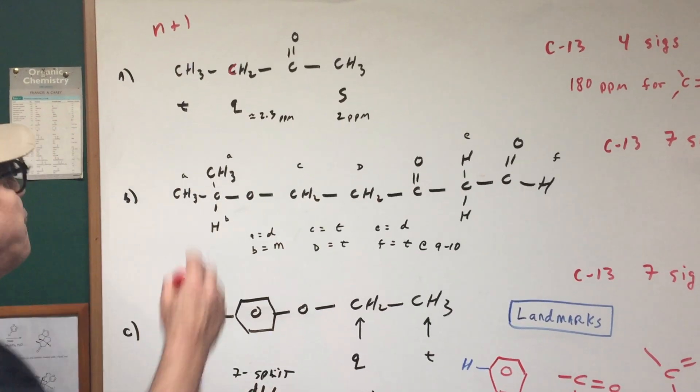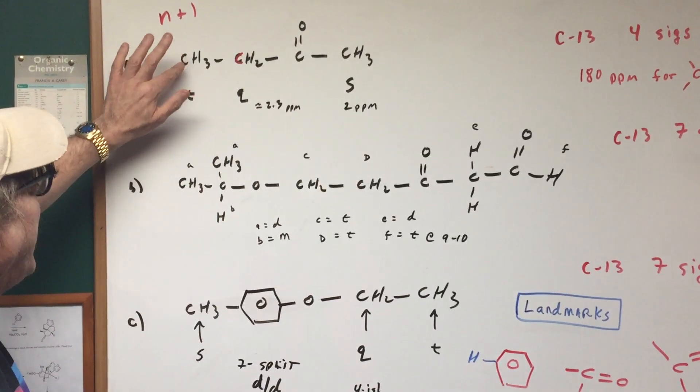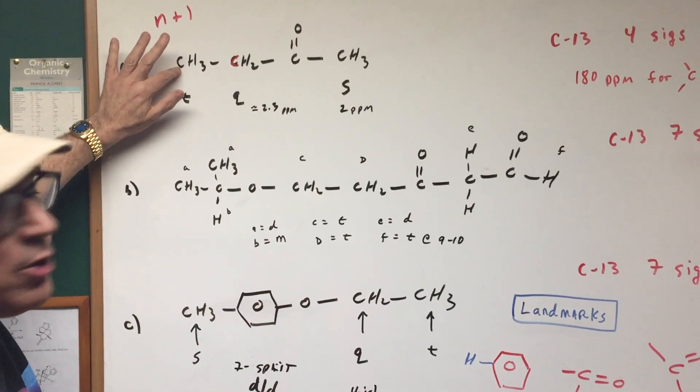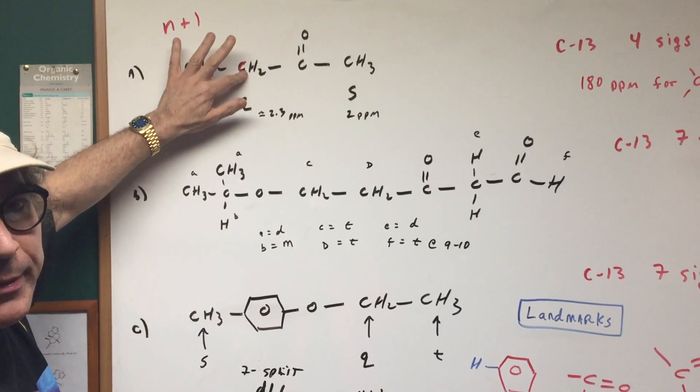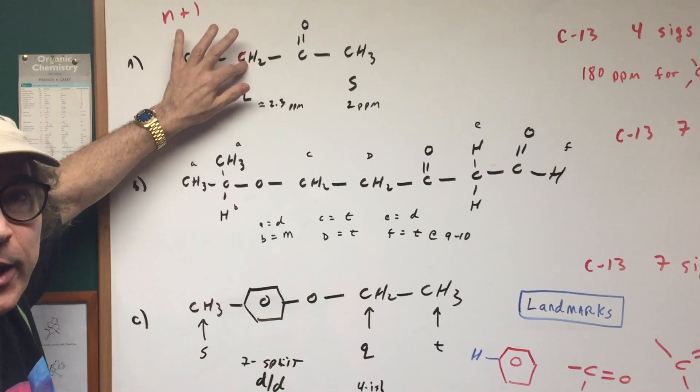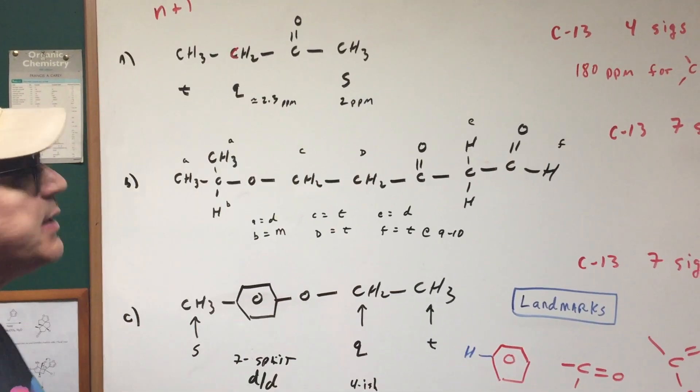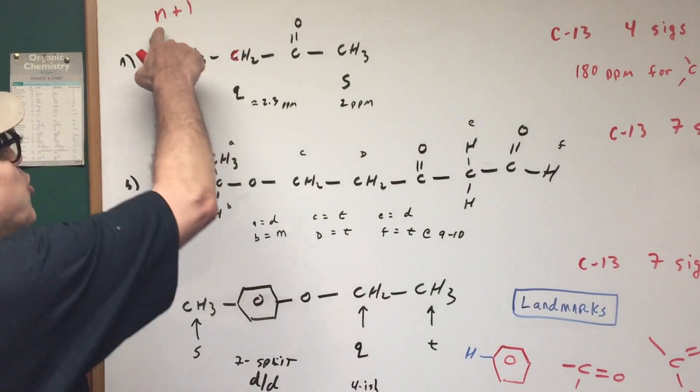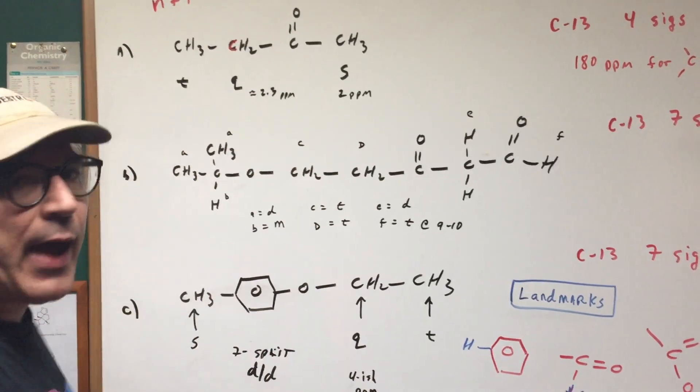Likewise, let's go for these H's. Those H's are on this carbon. Jump to the next door carbon and then see how many H's are on your neighbor. Since there's two H's, two plus one gives you three and that would give a triplet.